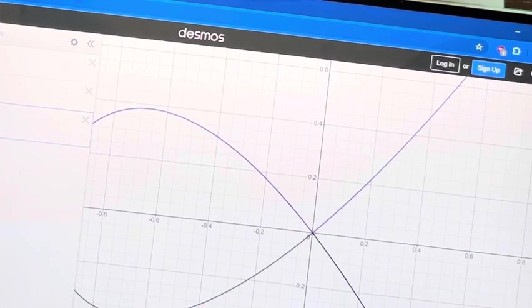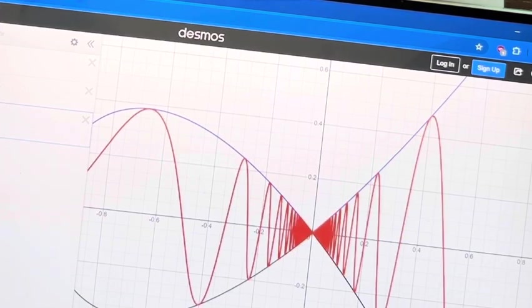And if we graph our function, we can see that it bounces between, like we said, at its greatest point it's equal to the purple function. At its lowest point it's equal to the black function, and it just bounces between them.